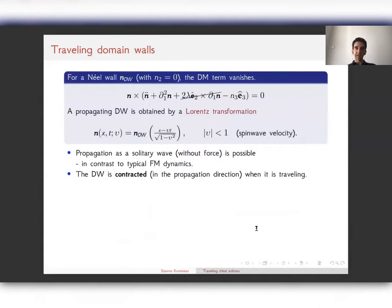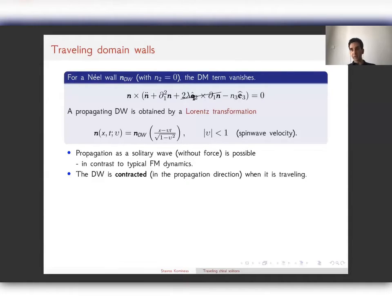Let us start a dynamical study by looking into the domain wall state in the one-dimensional model. If we take a Néel wall where the m₂ component is zero, the DM term vanishes, and we are back to a simpler model with only exchange and anisotropy. This model is Lorentz invariant, so once we know a static domain wall, we can obtain a propagating domain wall simply by a Lorentz transformation.